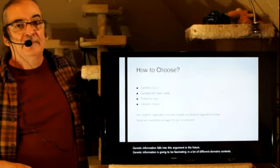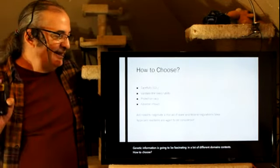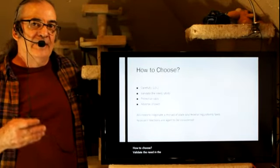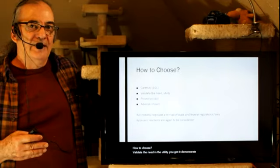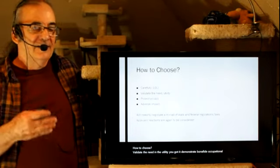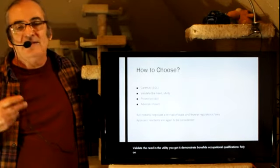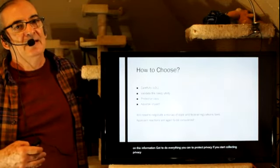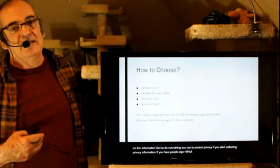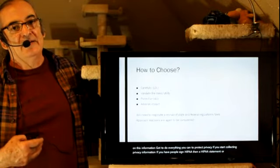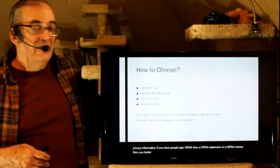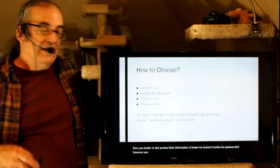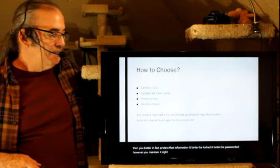How to choose? Let's choose carefully. Validate the need and the utility. You've got to demonstrate bona fide occupational qualifications rely on this information. You've got to do everything you can to protect privacy. If you start collecting privacy information, if you have people sign HIPAA, then a HIPAA statement or a HIPAA release, then you better, in fact, protect that information. It better be locked. It better be passworded, however you maintain it. And it better not be generating adverse impact.